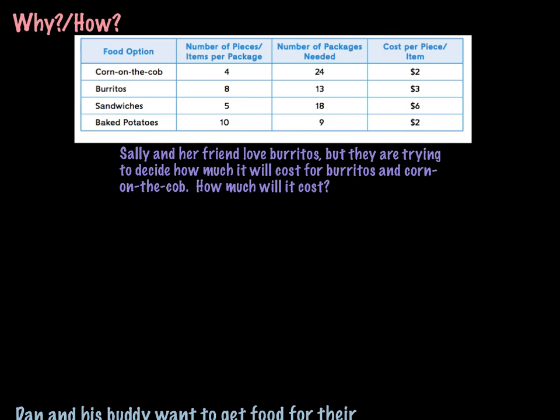So let's take a look at this next problem. Sally and her friend love burritos, but they are trying to decide how much it will cost for burritos and corn on the cob. How much will it cost? So again, we're going to take a look at the chart, and we're going to look specifically at burritos going all the way across all of these numbers, and we're going to look at corn on the cob, all of these numbers, and we've got to set up an equation.